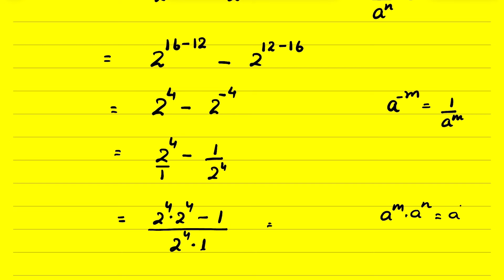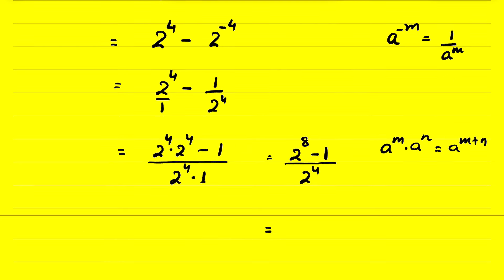So 2 raised to the power 4 plus 4 is 2 raised to the power 8, giving us 2 raised to the power 8 minus 1 upon 2 raised to the power 4. Now, 2 raised to the power 8 is 256, minus 1 is 255, and 2 raised to the power 4 is 16. So the final answer is 255 upon 16.